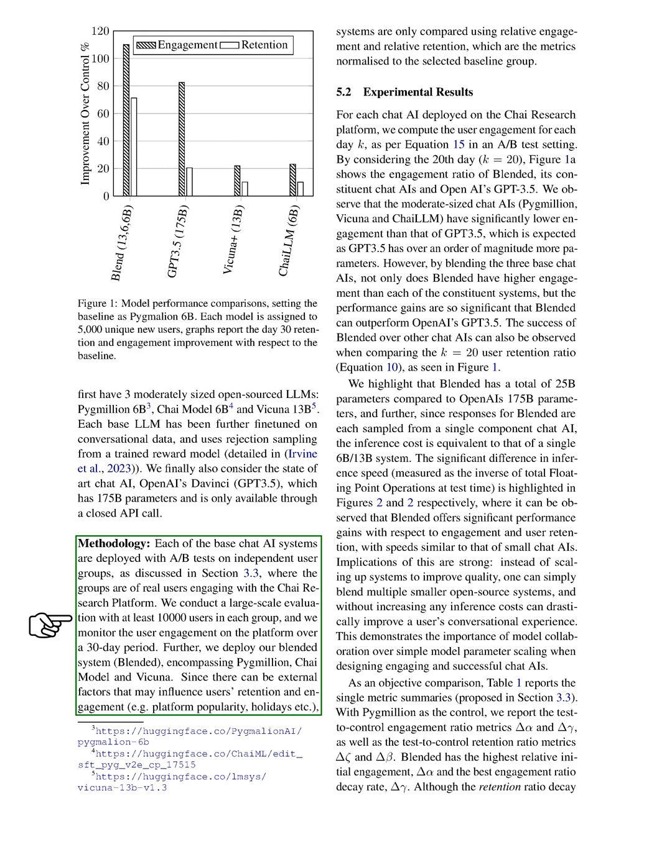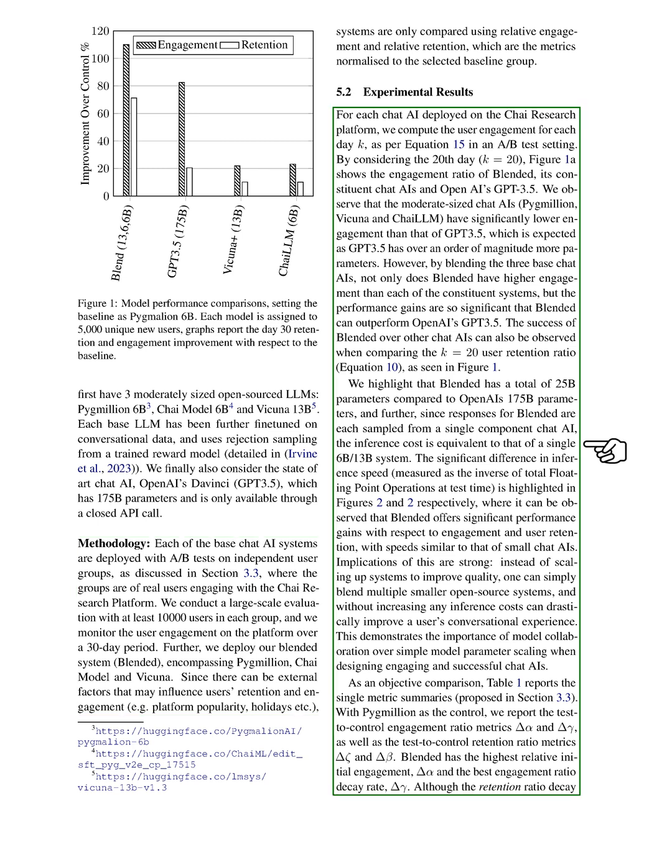Let's move on to our experimental results. For each chat AI deployed on the Chai Research Platform, we calculated the user engagement for each day K in an A/B test setting. On the 20th day, we found that the blended system and OpenAI's GPT-3.5 had higher engagement ratios than the other chat AIs. The blended system, in particular, outperformed OpenAI's GPT-3.5, despite having fewer parameters. This suggests that blending multiple smaller systems can improve user experience without increasing inference costs, highlighting the importance of model collaboration over simply increasing model parameters.